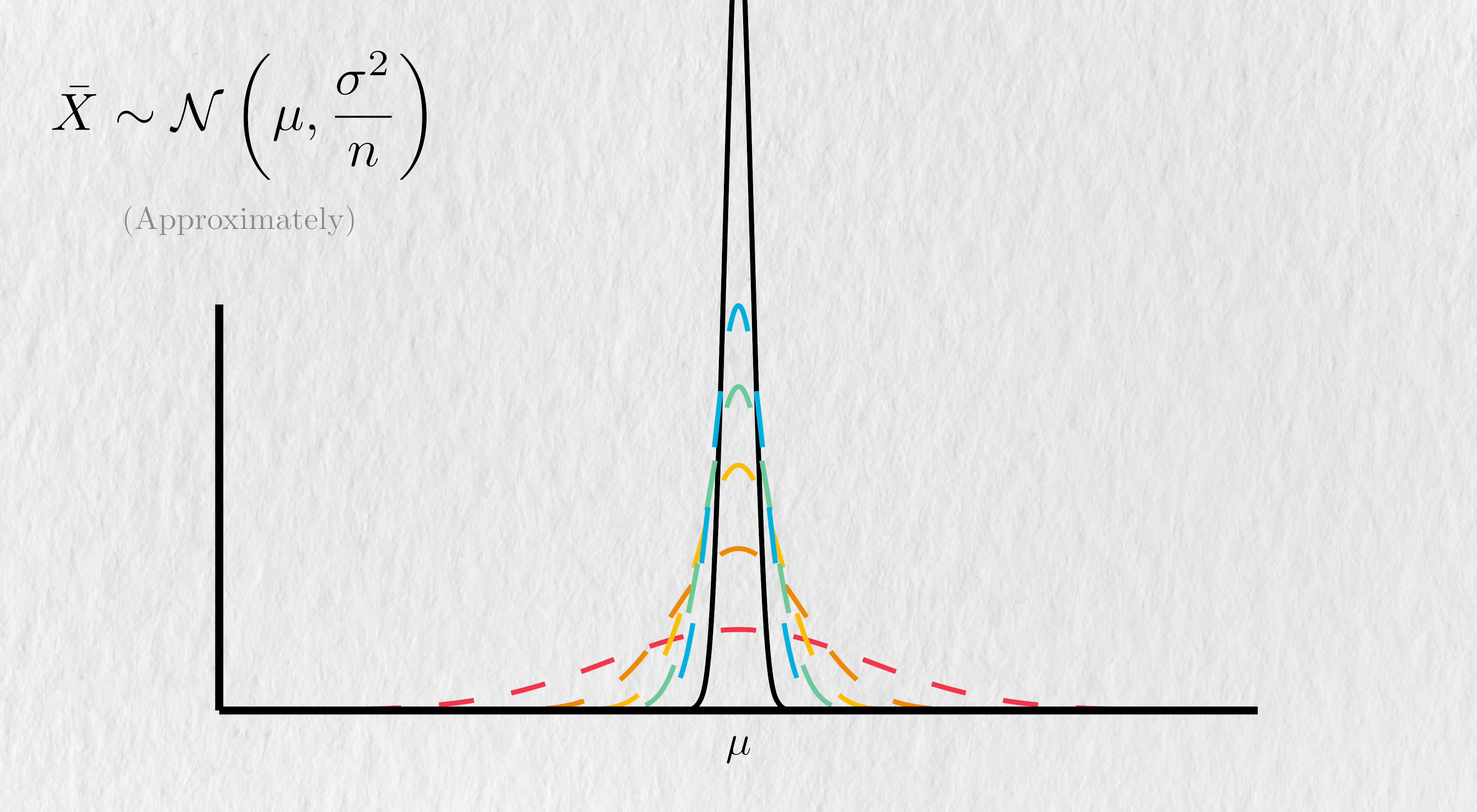You've actually already seen the central limit theorem in action already in this video. When we looked at the law of large numbers, we saw that we could observe sample means that were relatively far from mu when the sample sizes were small, and close with larger ones. This spread is governed by the central limit theorem, which means that we can also roughly control how precise we want our guess to be.